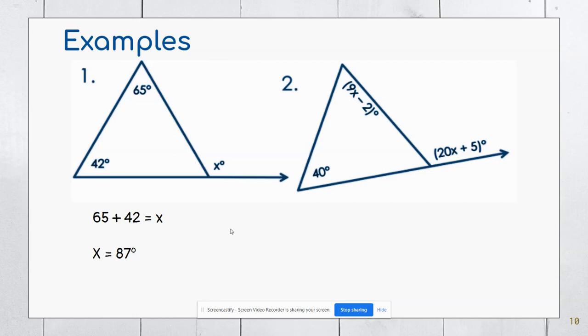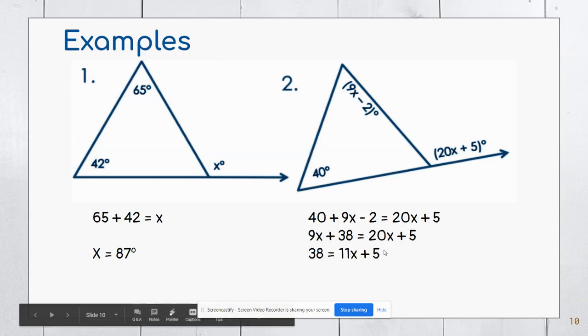In example two, I'm going to be solving for X. So I'm going to add 40 and 9X minus 2 and set that equal to 20X plus 5. I'm going to combine like terms on the left hand side. I like to keep X positive. So we see that there's more X's on the right hand side. So I would subtract 9X from both sides, giving me 11X. And then I'll subtract 5, giving me that 33 is 11X, or that X is 3.